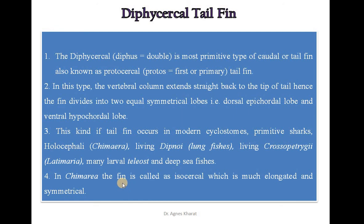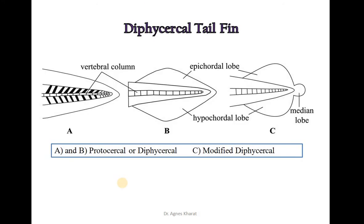Here we can learn that homocercal caudal fin and diphycercal tail fin, though externally they look similar, they are not similar internally. These are the diagrammatic representations of diphycercal tail fin. Diagrams A and B show the protocercal or diphycercal type of tail fin with equal division of epichordal and hypochordal lobes, and Diagram C represents the modified diphycercal type of tail fin with a median lobe.